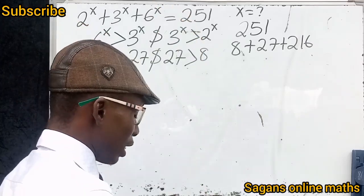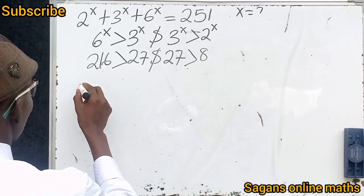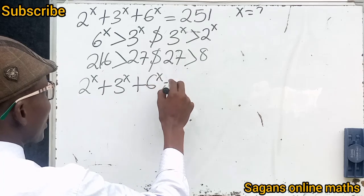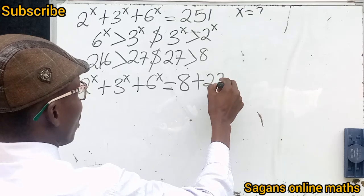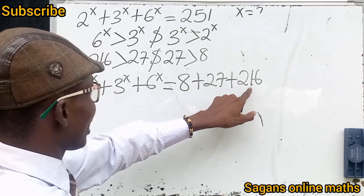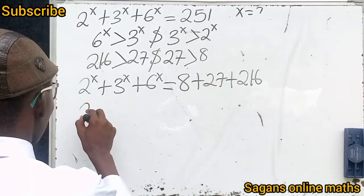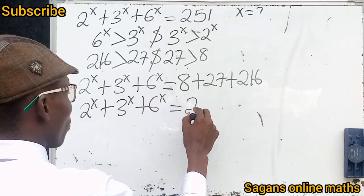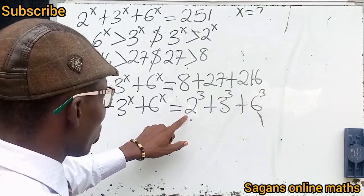Now let's rewrite this. That means: 2 raised to the power of x, plus 3 raised to the power of x, plus 6 raised to the power of x, equals 8 plus 27 plus 216, which equals 251. Now I'm going to put all of this in index form: 2^x + 3^x + 6^x = 2^3 + 3^3 + 6^3.